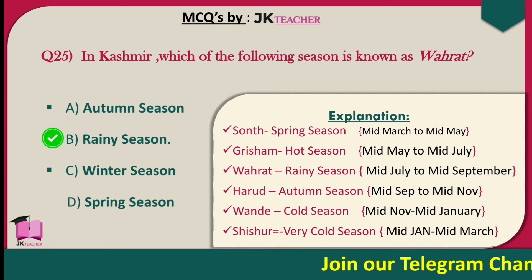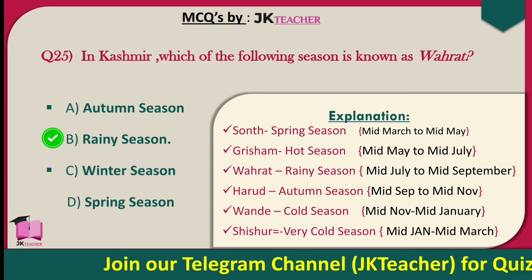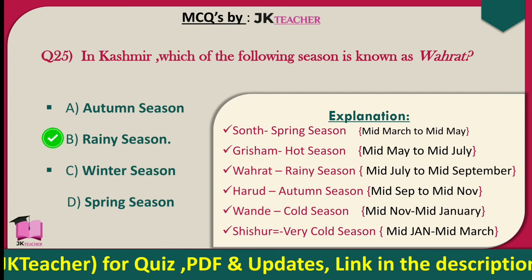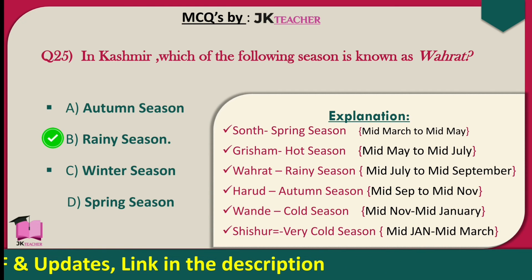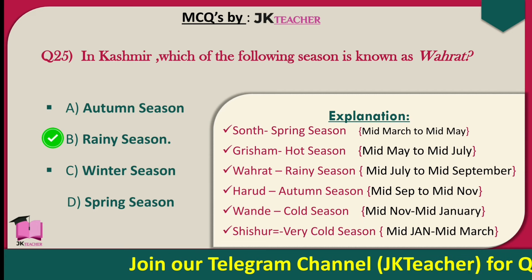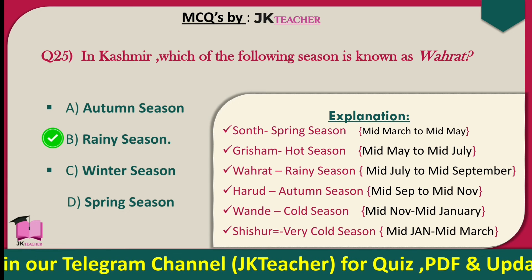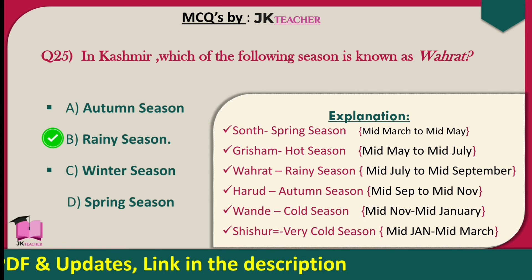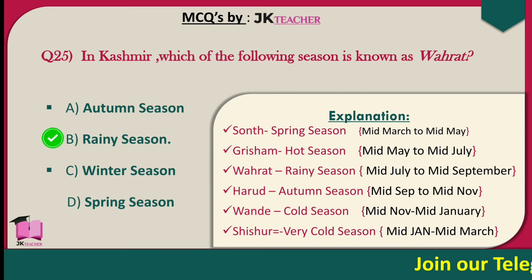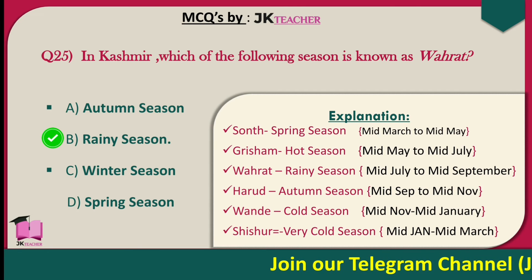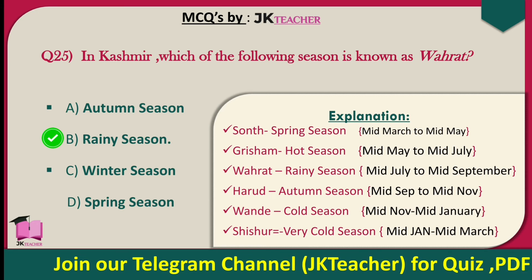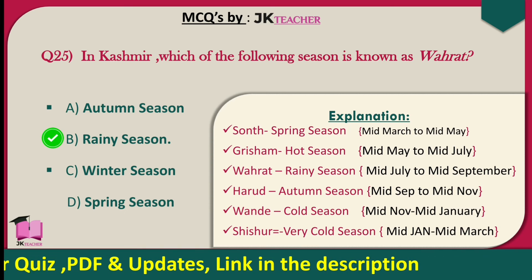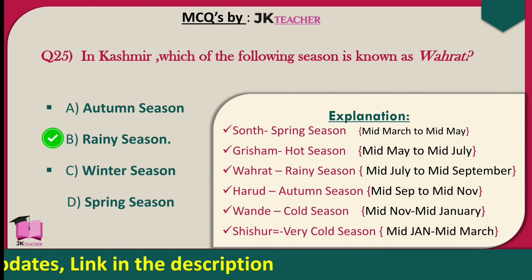The six Kashmiri seasons are: Grisham (hot season) — mid-May to mid-July; Wairat (rainy season) — mid-July to mid-September; Harud (autumn season) — mid-September to mid-November; Vandh (cold season) — mid-November to mid-January; and Shishur (very cold season) — mid-January to mid-March.